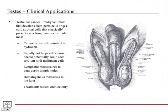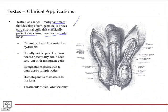Testicular cancer is a malignant mass within testicular tissue, usually developing from germ cells or sex cord stromal cells. There are many types — consult a pathology textbook for details. In general, these tumors present as a firm, painless testicular mass — painless is the key term. This is usually a disease of younger men in their twenties and early thirties, which is why primary care physicians strongly promote testicular self-exams for younger men. This cancer is very easily treated and cured when caught early.